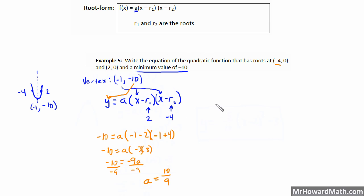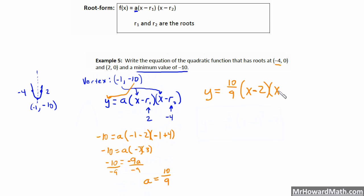Now I can write my equation: y equals ten-ninths times x minus 2 times x plus 4. It's always opposite of the sign, so negative four becomes plus 4. I could also write this as x plus 4 times x minus 2 — switching these means the same thing.